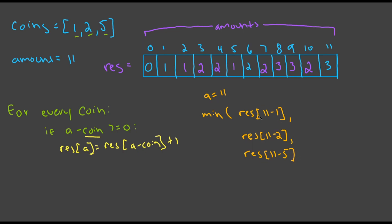Let's read this: result at 11 minus one is 10, and that's currently two. Result at 11 minus two is nine, which gives a value of three. And result at 11 minus five is six. So our min here is two. Once we find our min, we add one to it because this represents the newest coin. For example, if we're doing 11 minus one, we're looking at index 10, which has two fives making it up, and we add one to consider our coin of one.